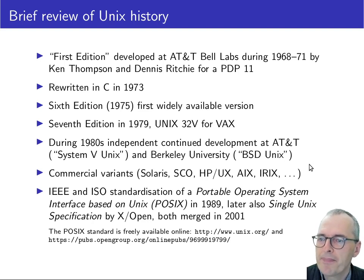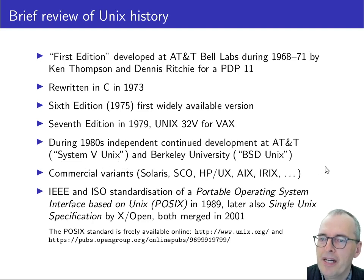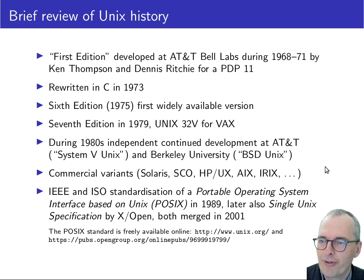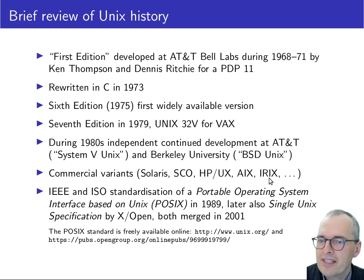AT&T itself developed a version known as System 5 Unix in the 1980s, and both of these versions became the basis for a number of commercial workstation and mainframe operating systems from companies like Sun, Hewlett Packard, IBM, and Silicon Graphics. That diversity of Unix implementations then caused portability problems.